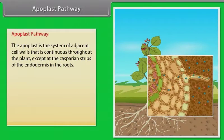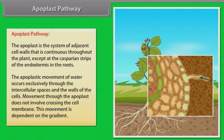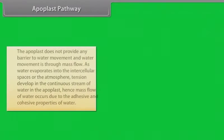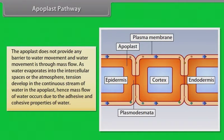Apoplast pathway. The apoplast is the system of adjacent cell walls that is continuous throughout the plant, except at the Casparian strips of the endodermis in the roots. The apoplast movement of water occurs exclusively through the intercellular spaces and the walls of the cells. Movement through the apoplast does not involve crossing the cell membrane. This movement is dependent on the gradient. The apoplast does not provide any barrier to water movement and water movement is through mass flow. As water evaporates into the intercellular spaces or the atmosphere, tension develops in the continuous stream of water in the apoplast. Hence, mass flow of water occurs due to the adhesive and cohesive properties of water.